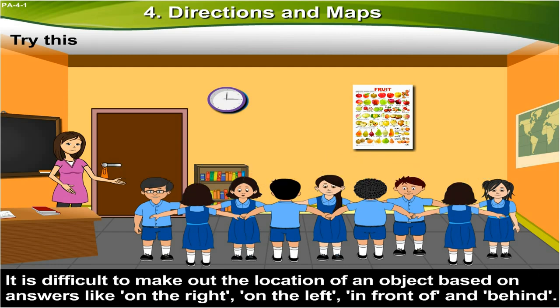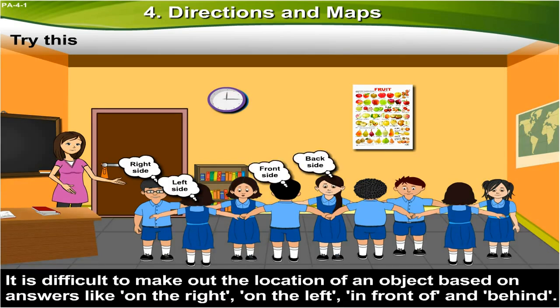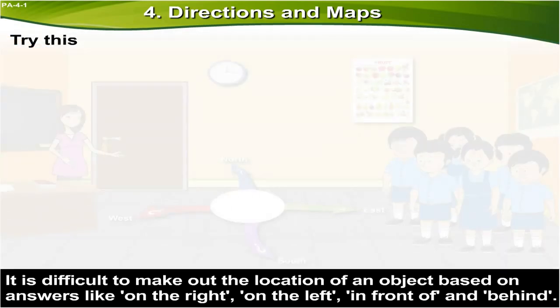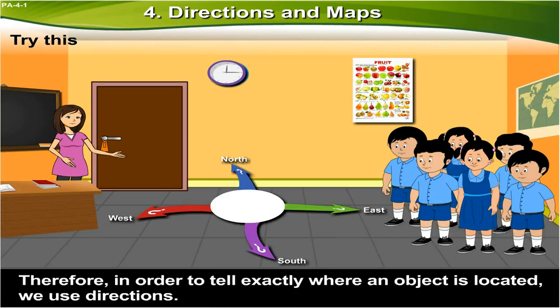It is difficult to make out the location of an object based on answers like 'on the right,' 'on the left,' 'in front of,' and 'behind.' Therefore, in order to tell exactly where an object is located, we use directions.